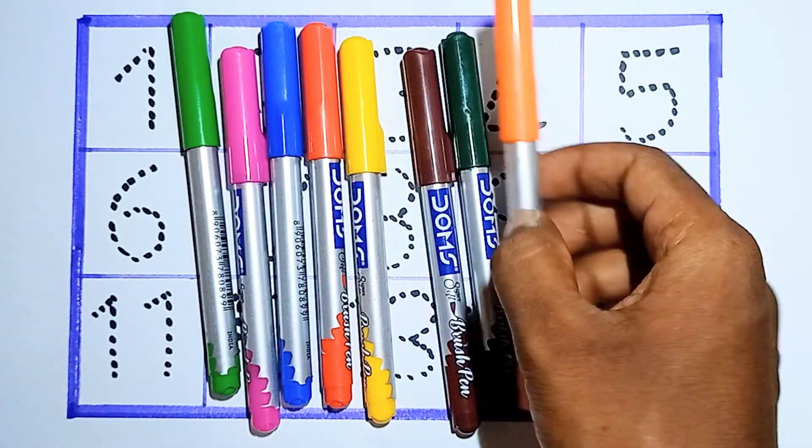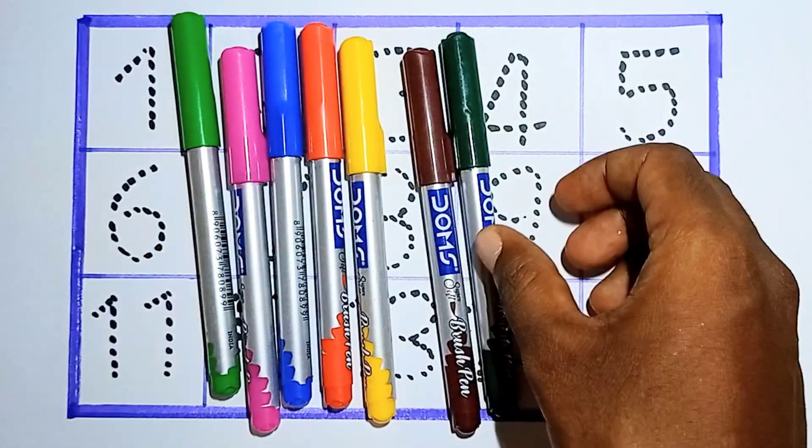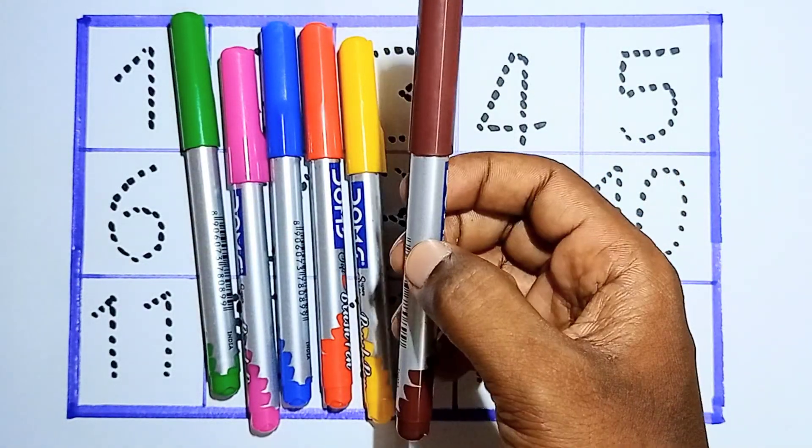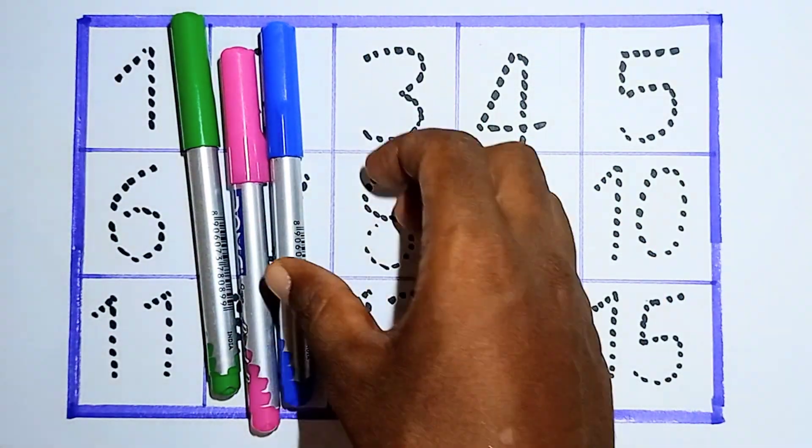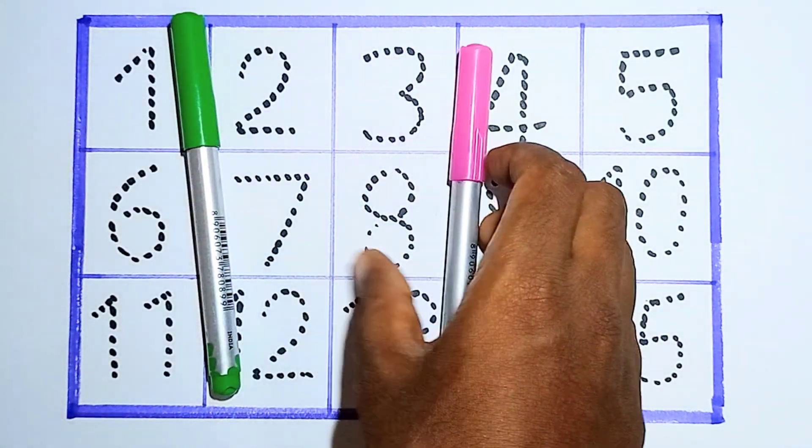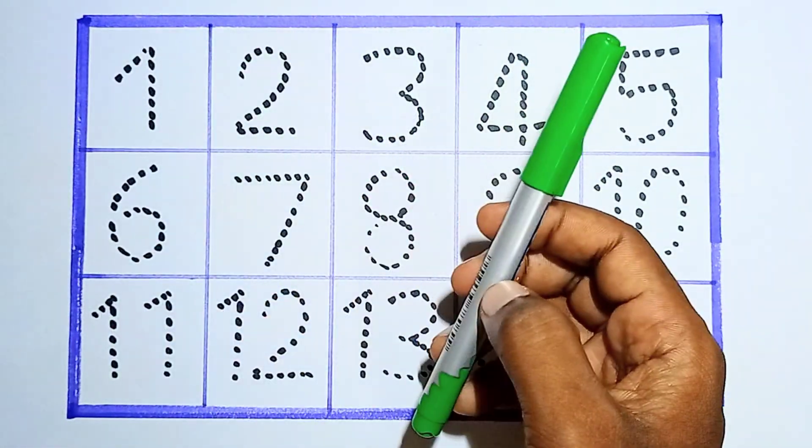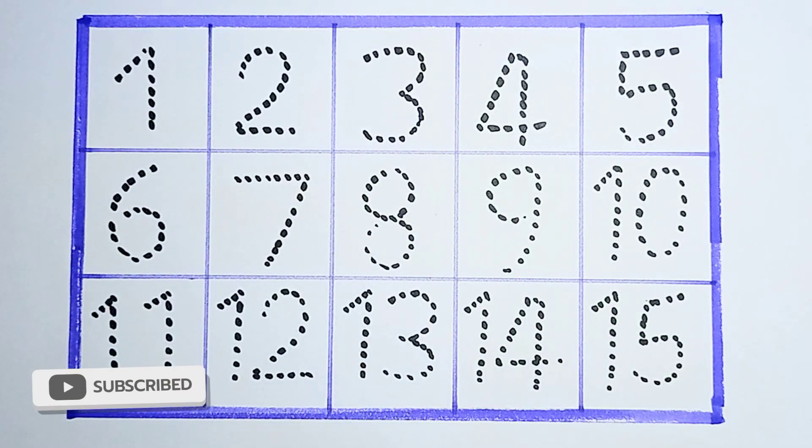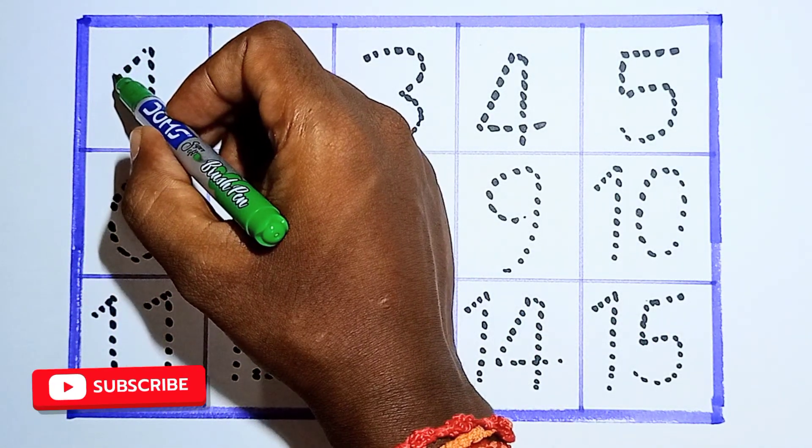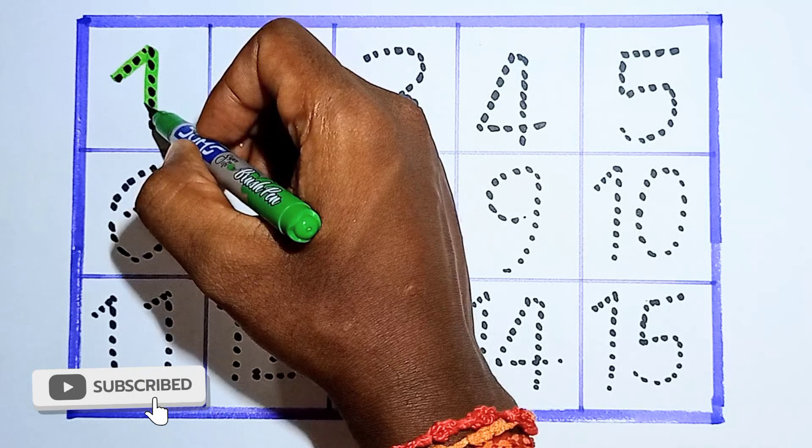Shall we start? Say it with me. This is orange color, dark green color, brown color, yellow color, red color, blue color, pink color, and light green color. This is our numbers 1 to 15. Shall we start?